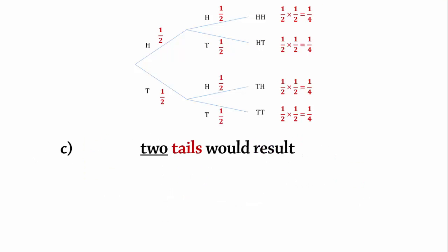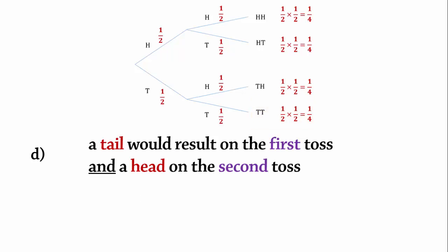Part C. What is the probability that two tails would result? It can be seen directly from the probability tree that the probability of tail-tail is 1/4 or 0.25. Part D. What is the probability that a tail would result on the first toss and a head on the second toss? This can also be seen directly on the tree that the probability of tail-head is 1/4 or 0.25.